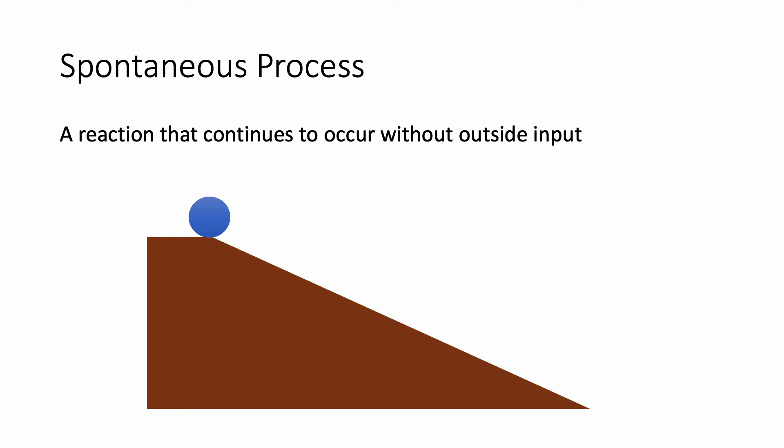Now we come to the idea of a spontaneous process — a reaction that continues to occur without outside input. A couple of things to know: first, sometimes they need a little bit of energy input to get going; that doesn't stop them from being spontaneous. Second, just because they're spontaneous does not mean they will go on forever. For example, here's a ball perched on top of a hill. If someone gives it a slight nudge, it could move down the hill. It would not roll downhill forever, only until it got to the bottom. But it does not need pushing to go down — once it starts, it keeps going as long as there's hill left to roll down.